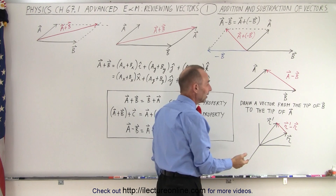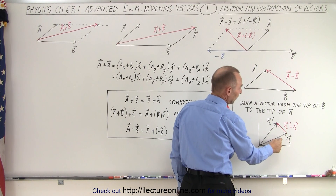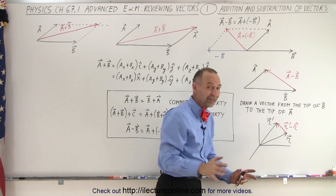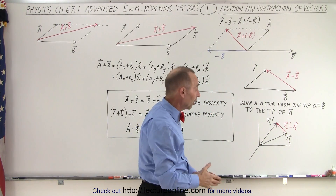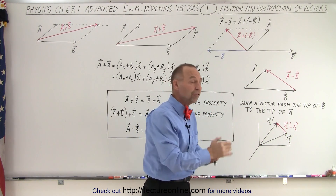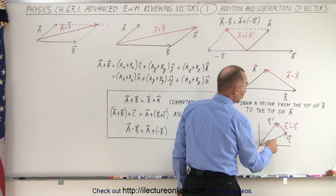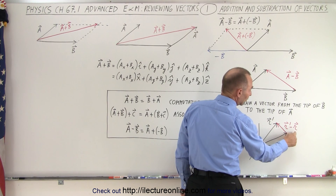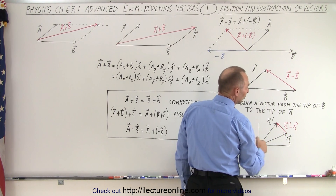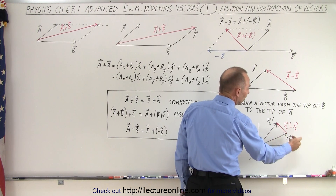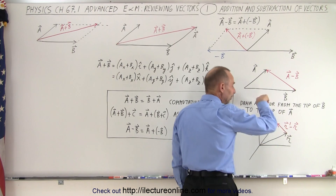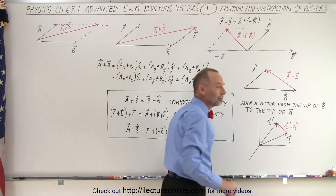Here's another example. Say we have two vectors: the position vector R and the position vector R prime. The prime doesn't necessarily mean it's the derivative of vector R — it's simply a different position vector. If we want to subtract R from R prime, the vector is drawn from the tip of the vector you're subtracting to the tip of the vector you're subtracting it from. So this will be R prime minus R, pointing in this direction. If it's R minus R prime, the vector would point in the opposite direction.